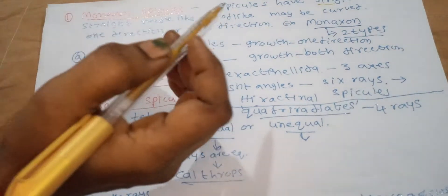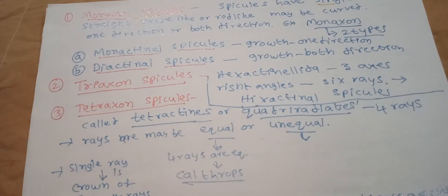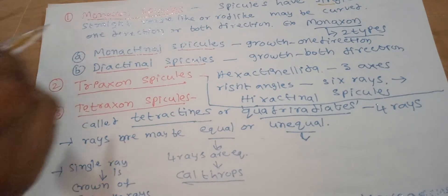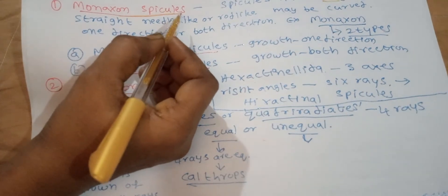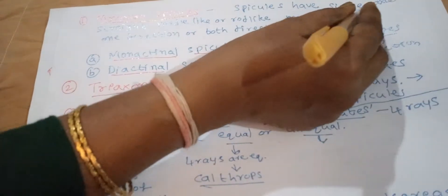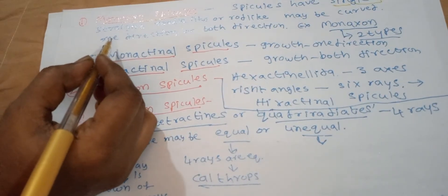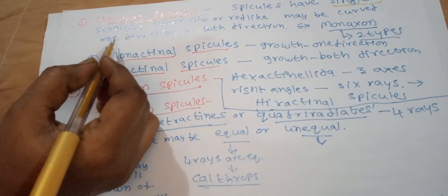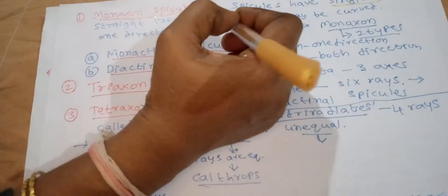Megascleres are large in size and make up the supporting framework in the sponges. First type: monaxon spicules. These spicules have a single axis and are formed by growth along one axis.